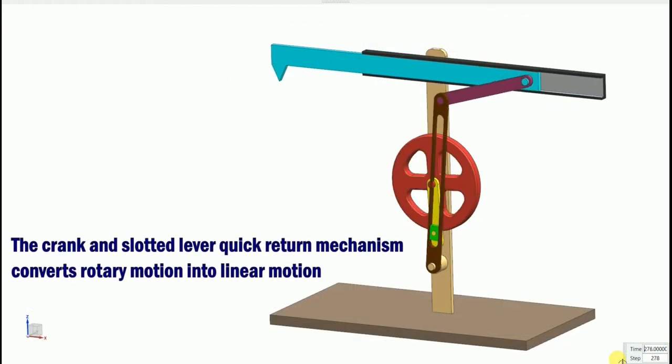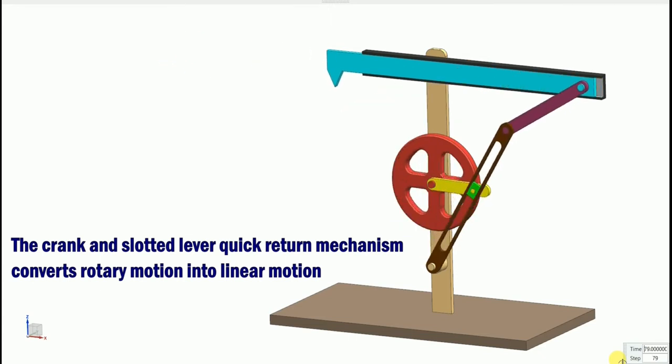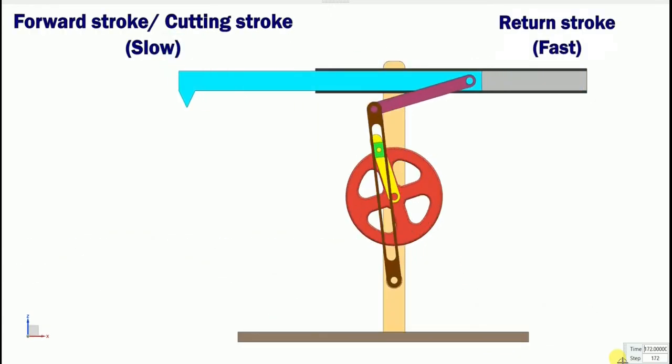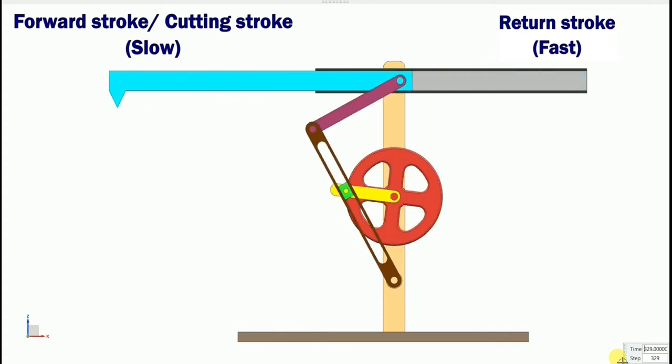The crank and slotted quick return mechanism converts rotary motion into linear motion. In this mechanism, the return stroke of the ram is faster than the forward stroke.